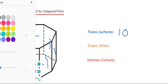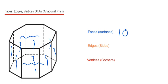So let's do the edges next. The edges are the same as the sides — that's where two faces meet. A quick way to do this is to count the lines that you see. So we've got one, two, three, four, five, six, seven, eight, nine, ten, eleven, twelve, thirteen, fourteen, fifteen, sixteen, seventeen, eighteen, nineteen, twenty, twenty-one, twenty-two, twenty-three, twenty-four. So we have twenty-four edges.